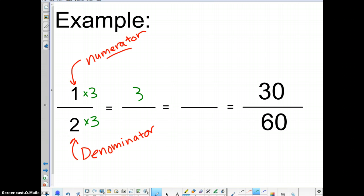One times three would be three. Two times three would be six. Alright. Three sixths is equivalent to one half and it's also equivalent to thirty sixtieths. And it should look rather similar to thirty sixtieths because all that's missing is the zeros.